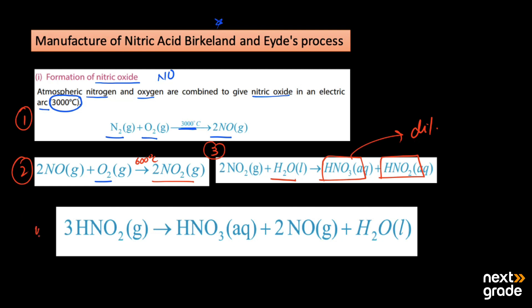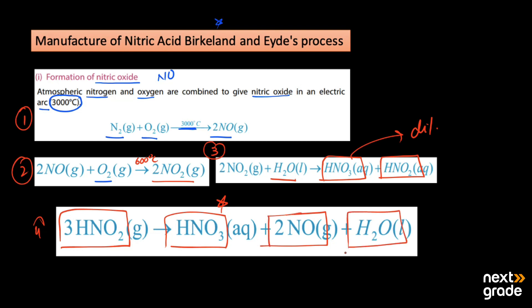In the fourth step, the nitrous acid (HNO2) is oxidized, and the nitric oxide is re-oxidized to produce nitric oxide and water. This method can be used for large-scale production of nitric acid because we use nitrogen and oxygen present in the atmosphere, so we don't need to purchase any reactants. The key requirement is that the electric arc must be at 3000 degrees Celsius.